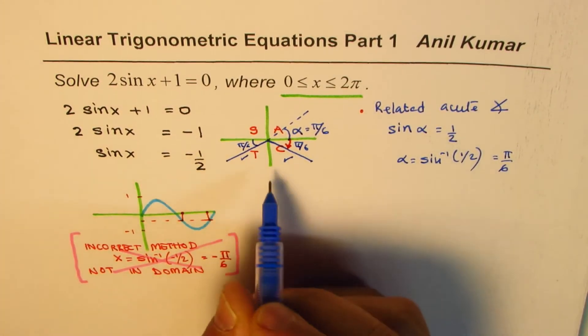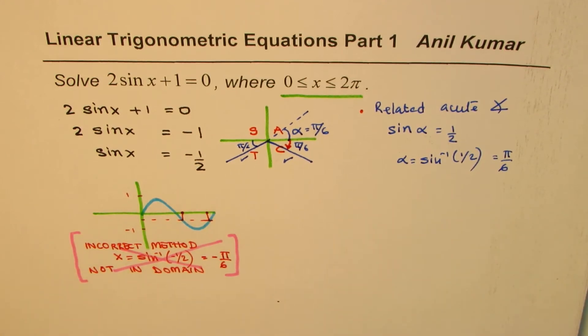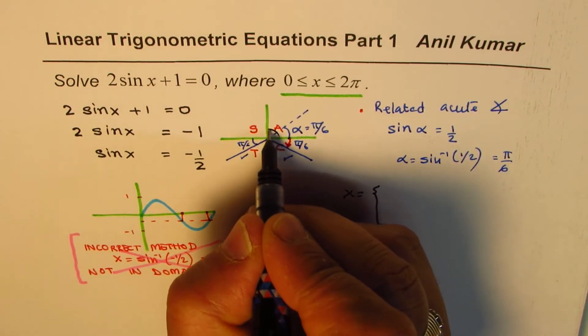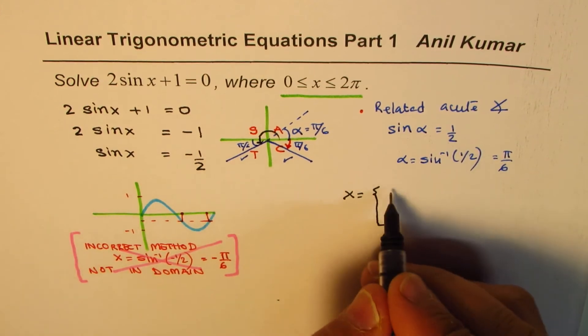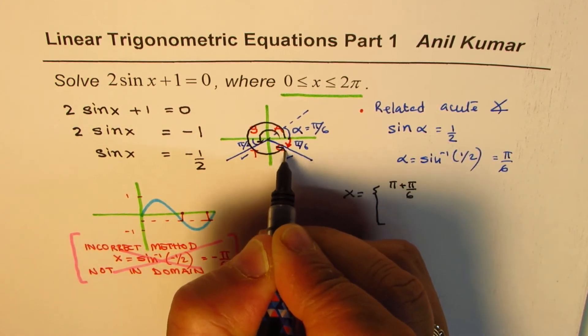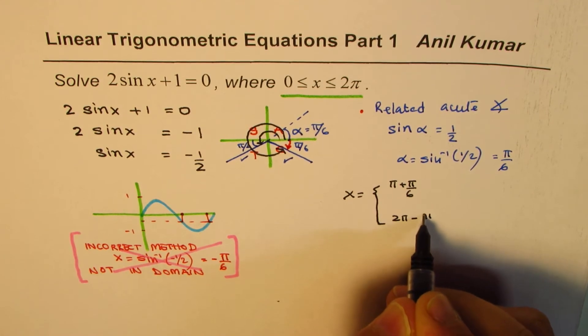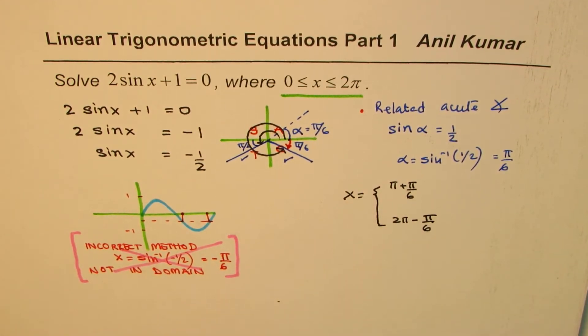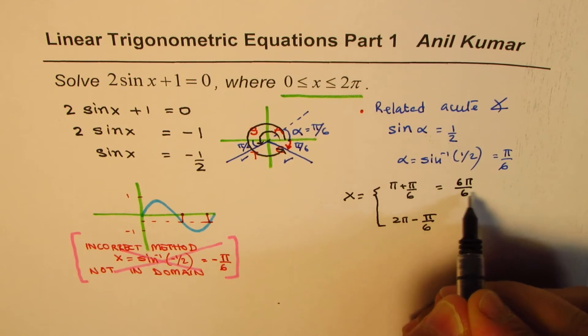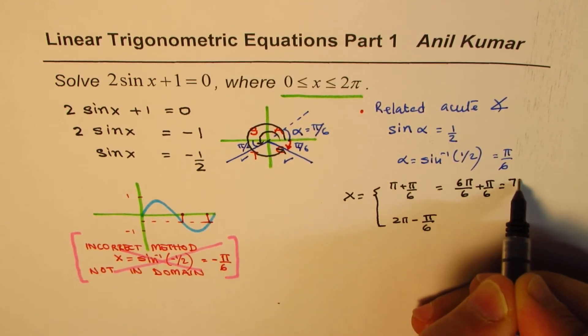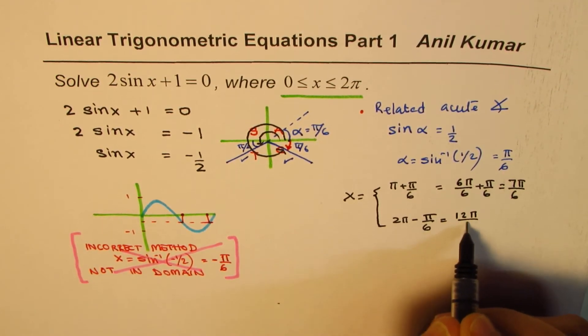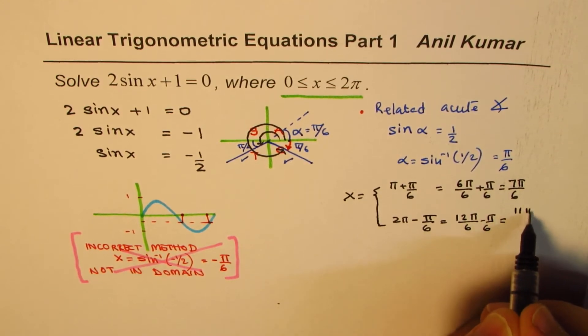Now when we are writing the two solutions, x can be written as there are two solutions. One is π + π/6. The other one is 2π - π/6. You can work this out. So you could write this as 6π/6 + π/6, which is 7π/6. And here 12π/6 - π/6, which is 11π/6.